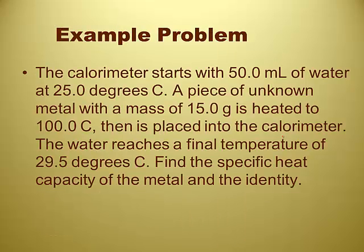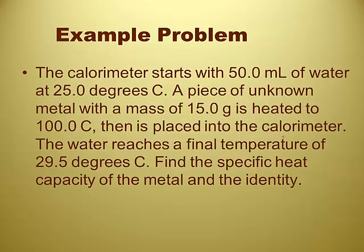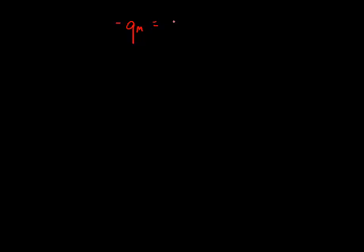Whatever energy the water gains, the metal lost the exact same quantity. You can use the concept that the loss of energy of the hot system equals the gain of energy of the cold system. You'll want to reference the specific heat capacity chart for this. The whole idea is that the energy of the metal — the hot substance — is lost to the water, and the water gains it. So that's a negative msΔT of the metal equals a positive msΔT of the water.